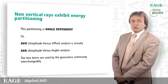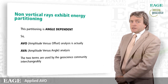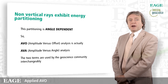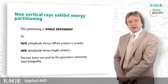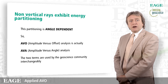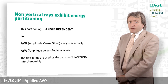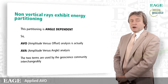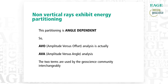This energy partitioning is angle dependent — it's dependent on the angle of incidence of that ray path onto the interface. So when we talk about amplitude versus offset analysis, we're really talking about amplitude versus angle analysis. AVO and AVA are interchangeable terms in the geoscience community. So if you've ever been confused by a paper that refers to AVA, it's actually the same as AVO.